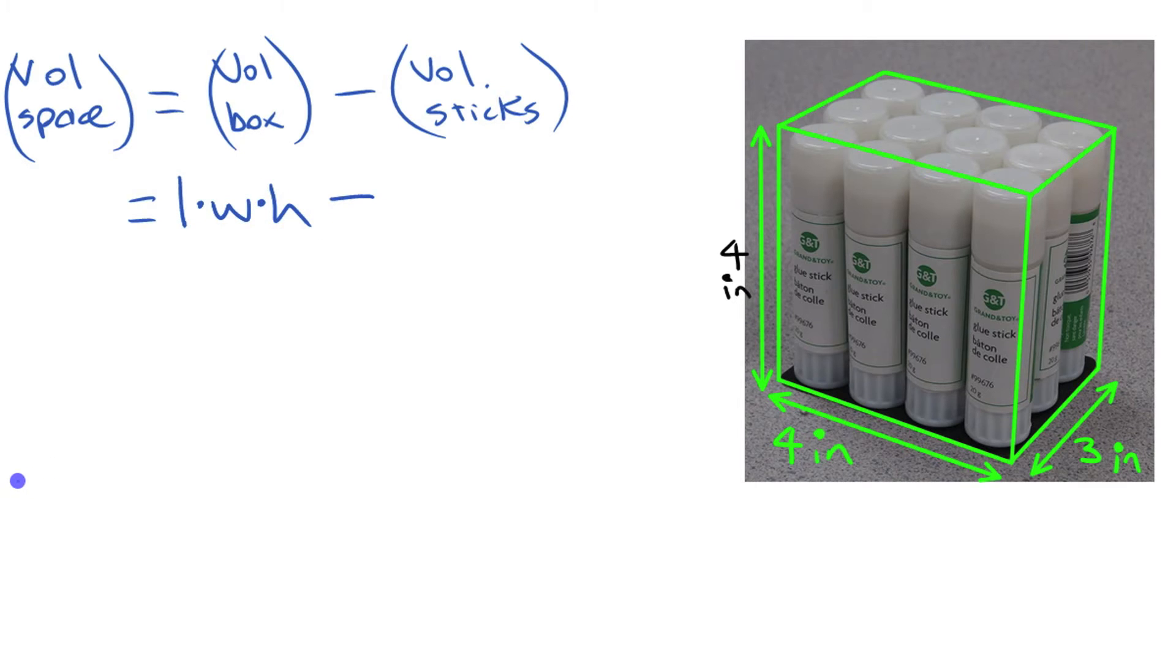And the volume of all 12 glue sticks, we're going to do 12 times the volume of one of the glue sticks. And to work with the volume of the glue stick, as long as we know the area of the base, one of these circles, and then we know the height of the thing. We can use the formula for volume of a cylinder. We can just go from the idea of area base times height. If we go pi times R squared times H, that's the volume of one of the glue sticks.